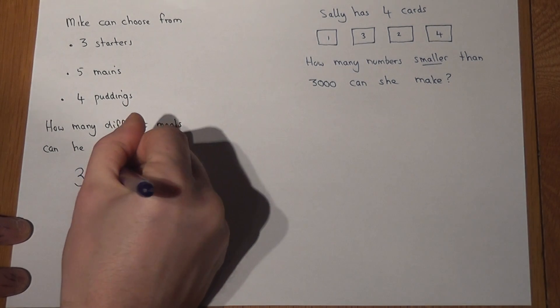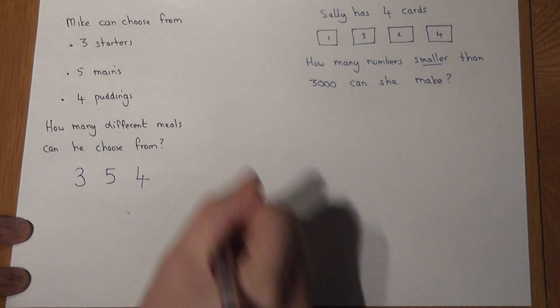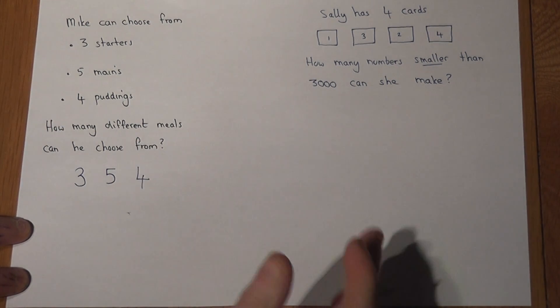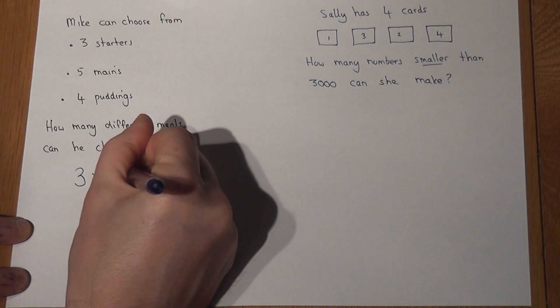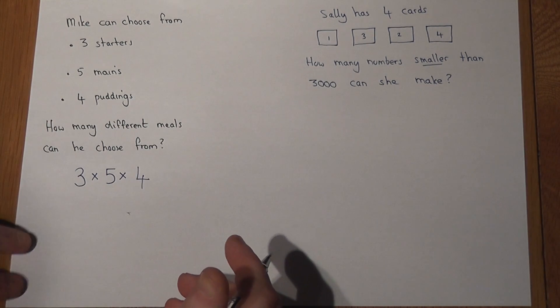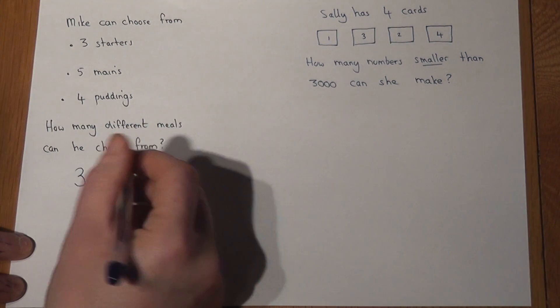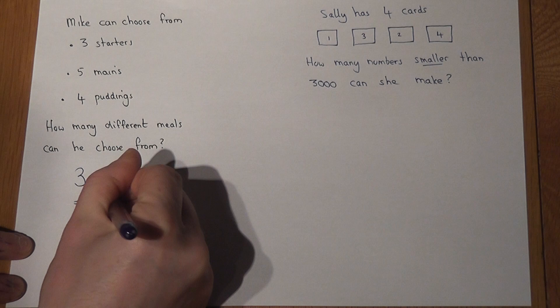He then has a choice of four puddings, and to find the total number of choices, all you do is multiply those three numbers together. 3 times 5 is 15, times by 4 equals 60.